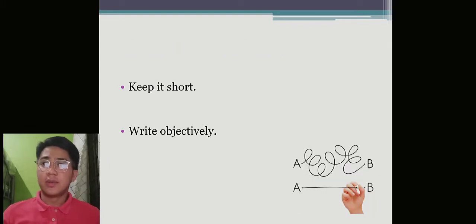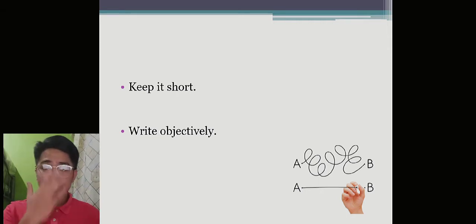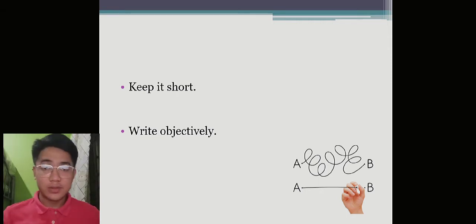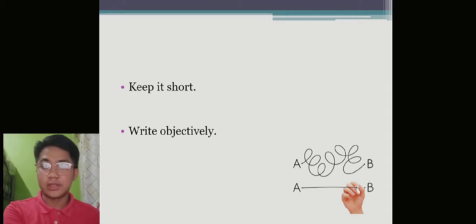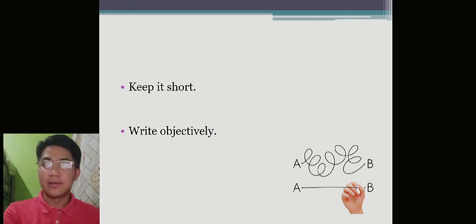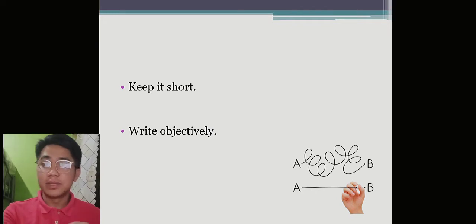Aside from those keys, we also have: keep it short and write objectively. The length of a summary is actually important — it depends on how you write the summary from the original text. Keeping it short is better than making it long, because the longer the text is, the more mistakes you commit.